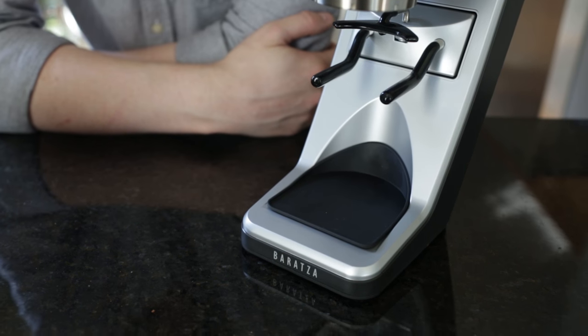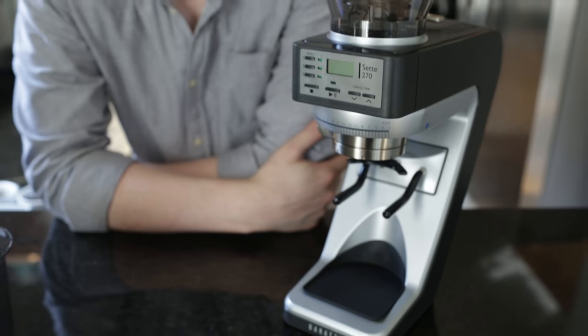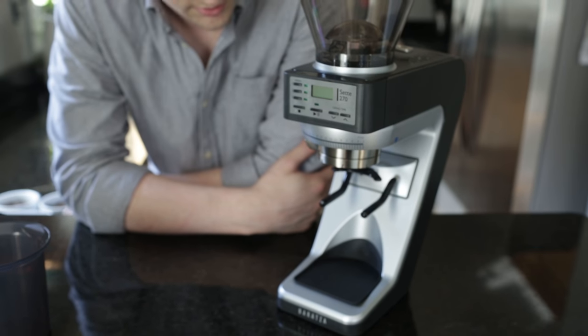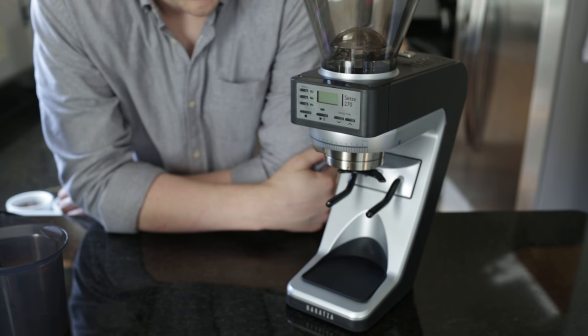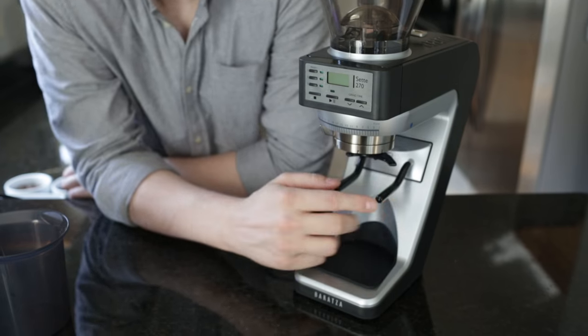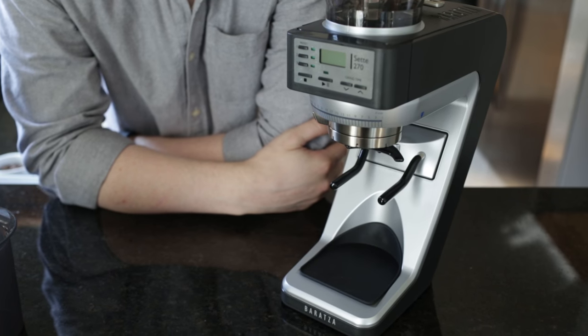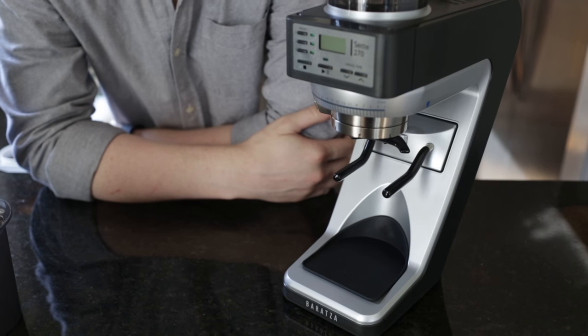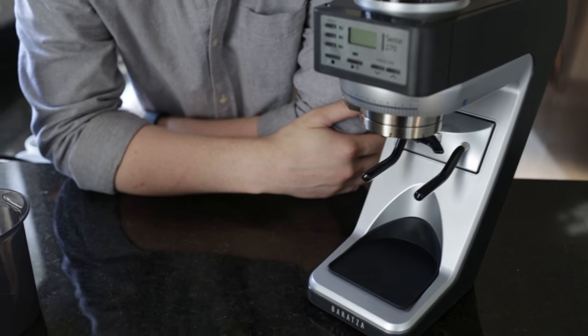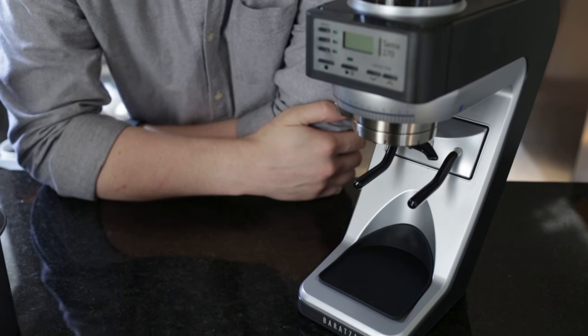It will certainly accommodate something like a La Marzocco portafilter, if you have like a Linea Mini at home or something like that, as well as a wide range of other commercial-sized portafilters. The forks are set a little bit wide for smaller portafilters. So a 49mm might have some trouble staying there while it's grinding. A 51 is also questionable. A 53 should work.